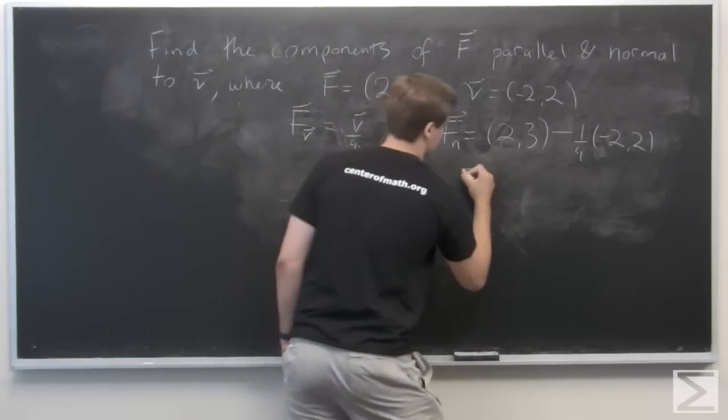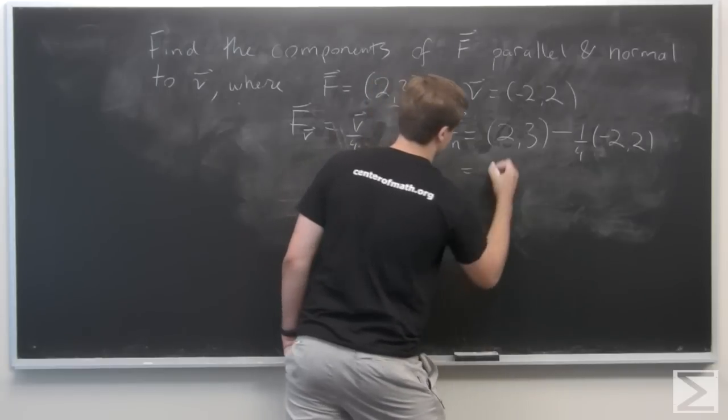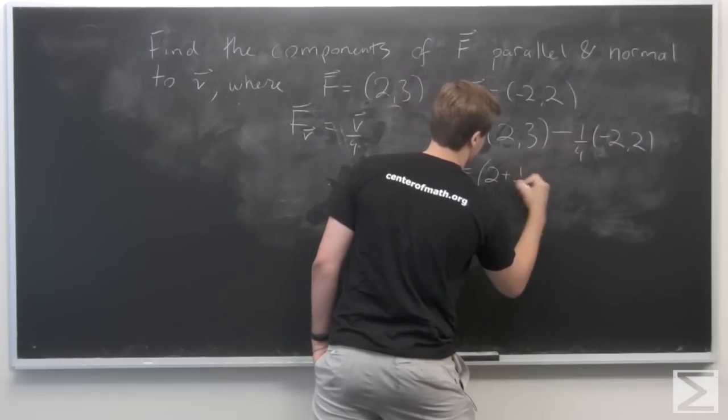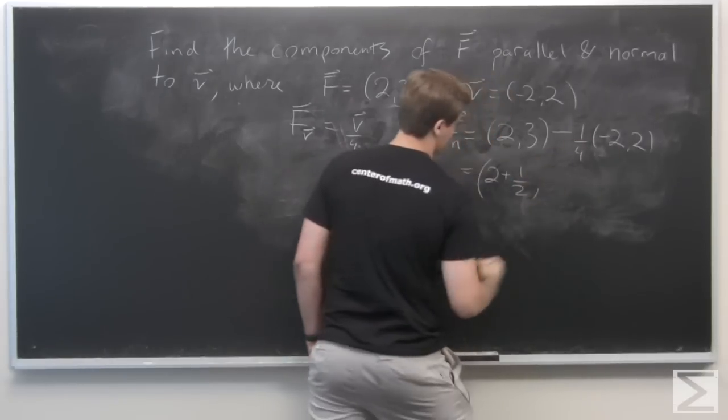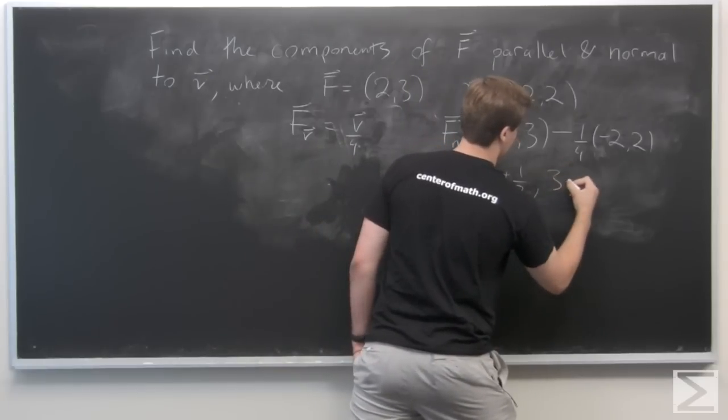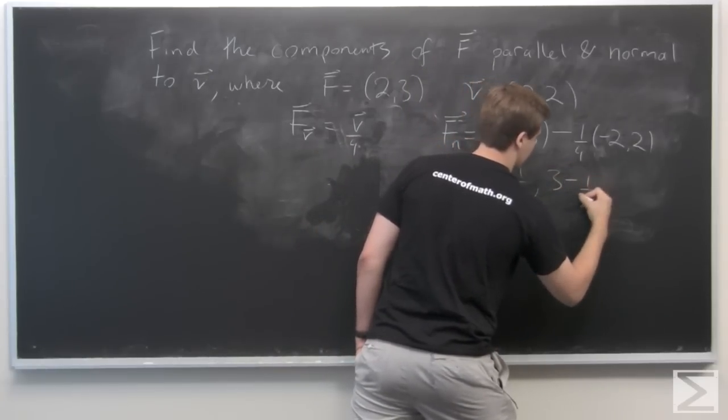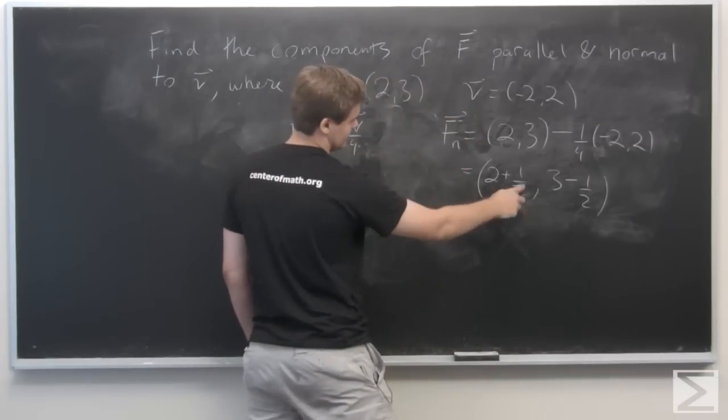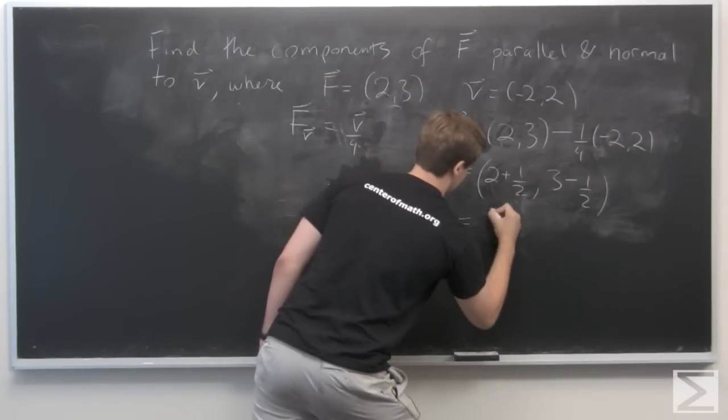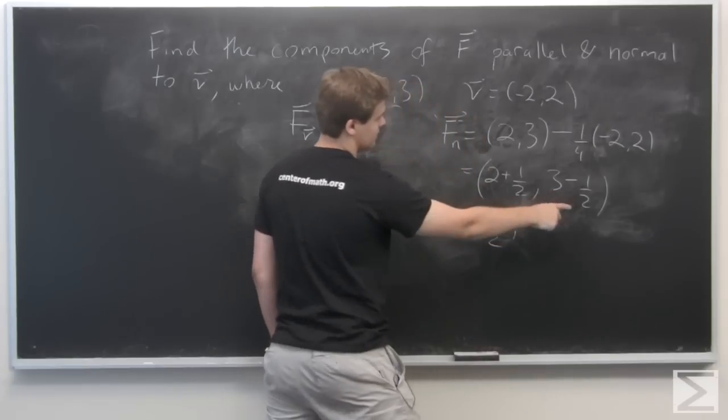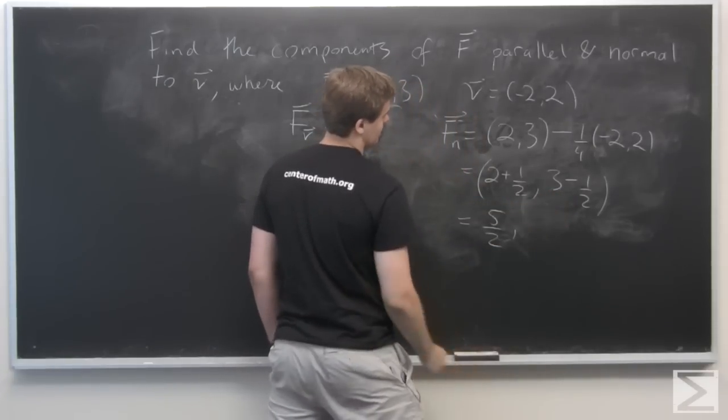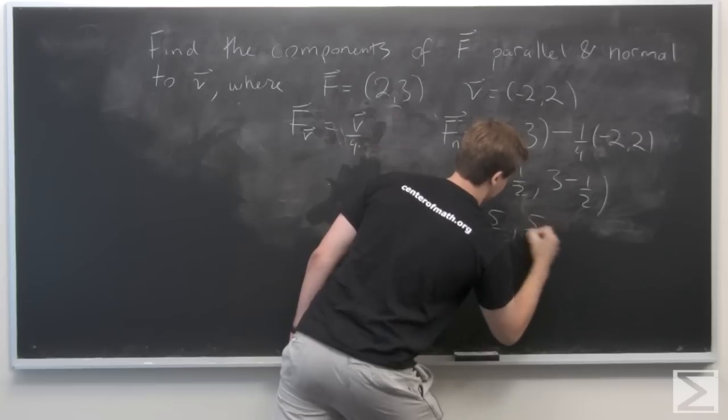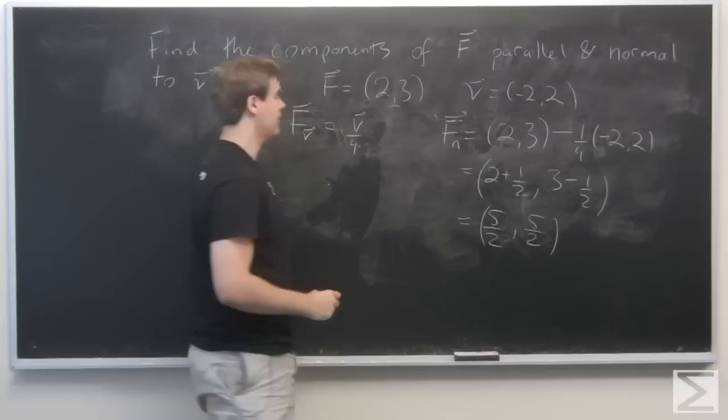Okay, so simplify this. This is 2 minus (-1/2), which is 2 + 1/2, so 5/2. And 3 minus 1/2 is 2.5 as well, so we have 5/2 comma 5/2.